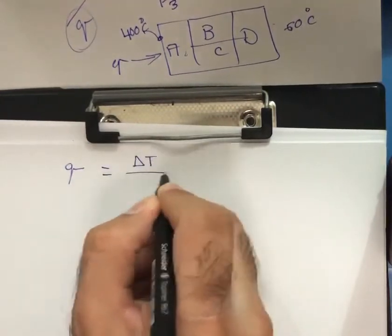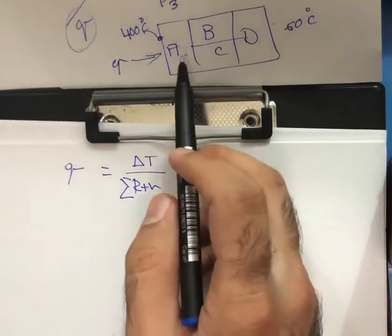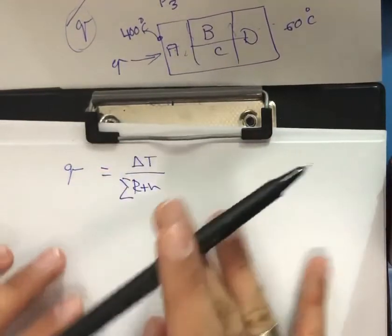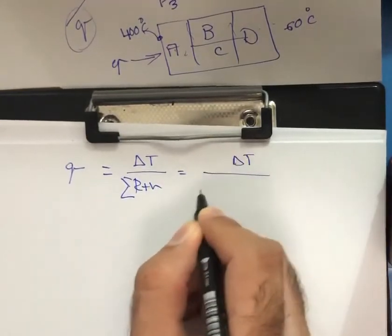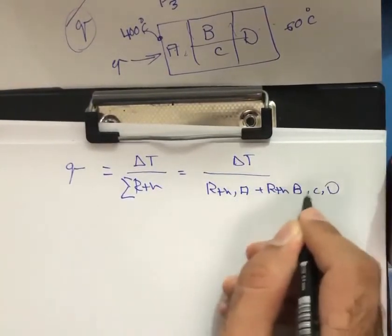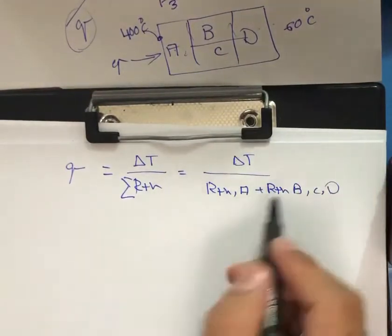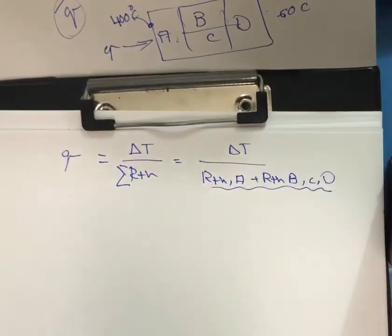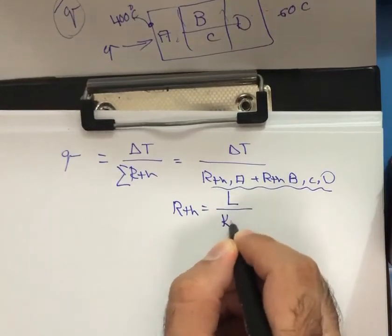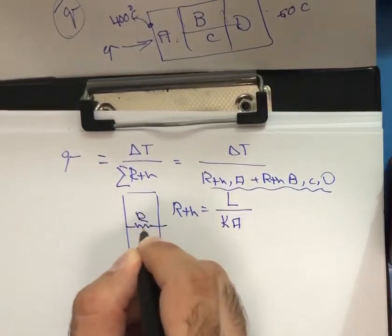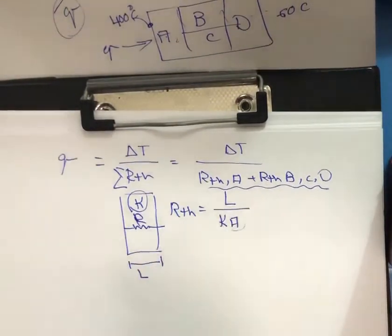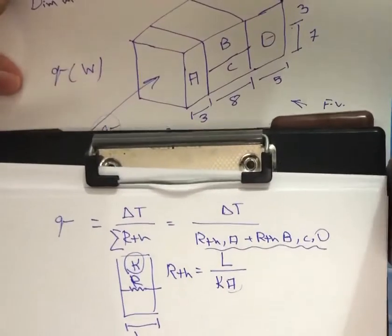To calculate heat transfer, we first find the thermal resistance for each wall separately. The thermal conductivity of each material is given. The heat transfer q equals temperature difference divided by total thermal resistance. We have walls A, B, C, D. There is no temperature drop reduction at the interface assumed here. So q equals delta T divided by (R_A plus R_BC_equivalent plus R_D).